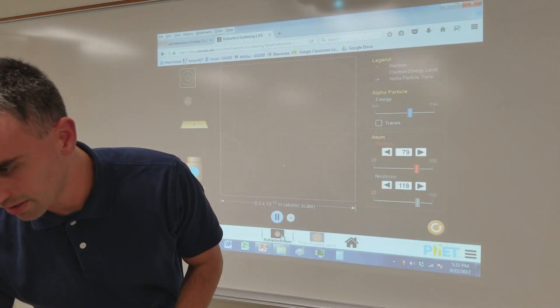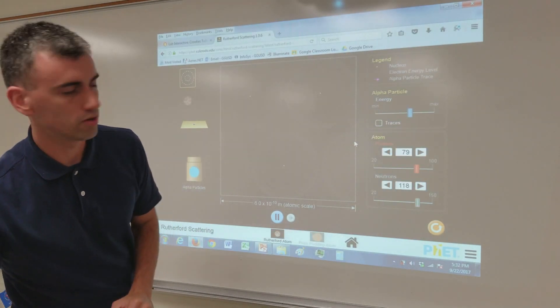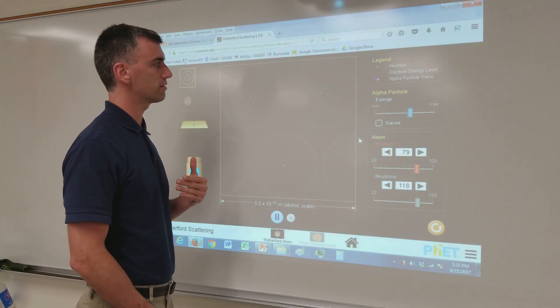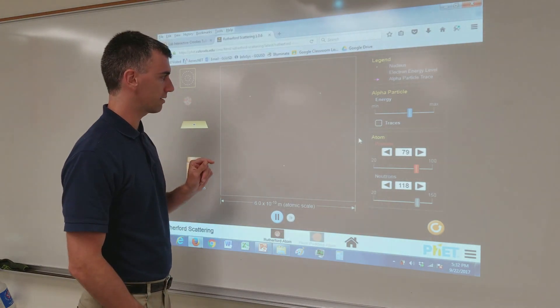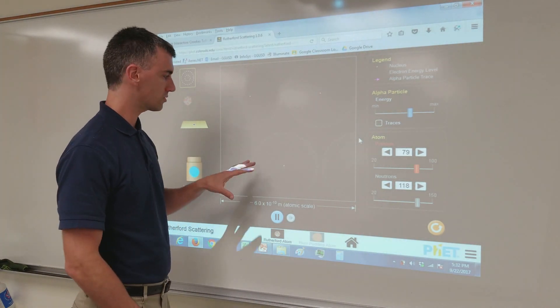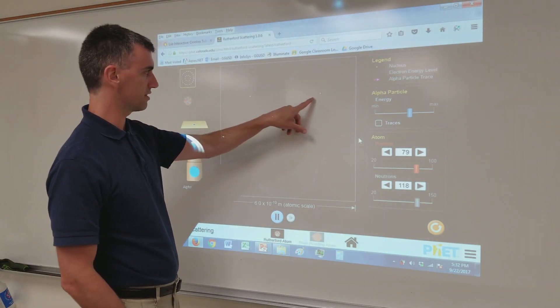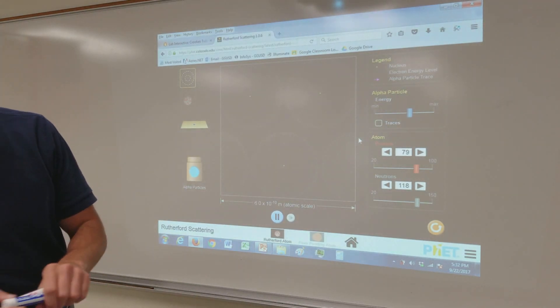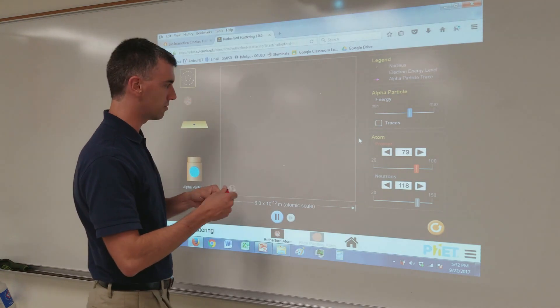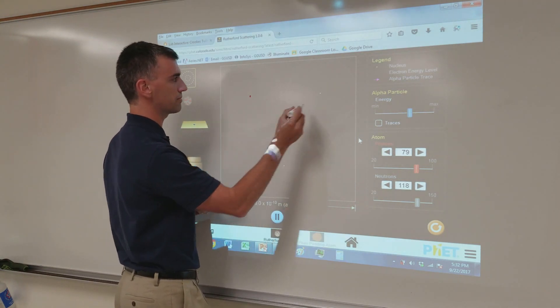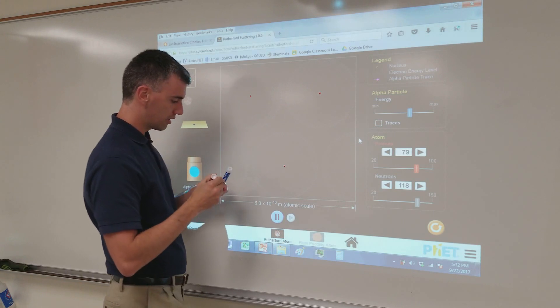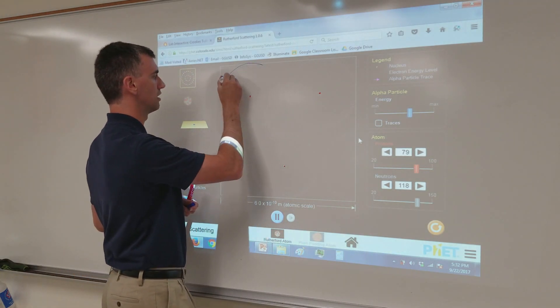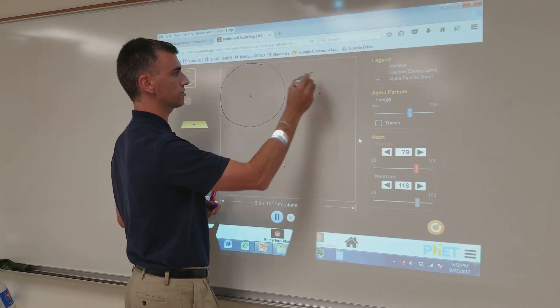But, of course, he didn't see that. What he saw was some of the alpha particles bouncing off. So, that's what I can show you here. Tiny little dots represent the nucleus. Now, you viewing online might have a hard time seeing this. It's a small little thing. So, I'll use these little red dots to represent the nucleus.